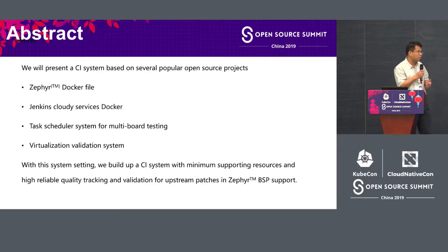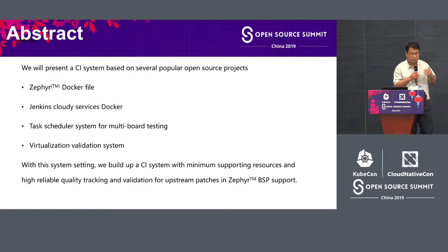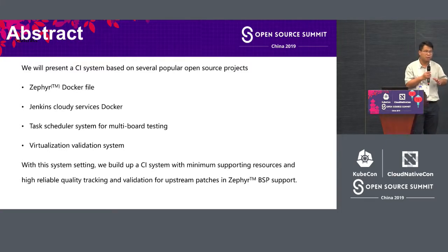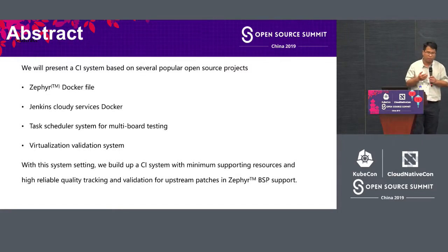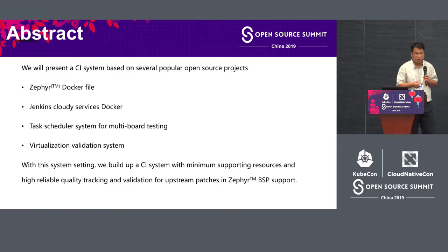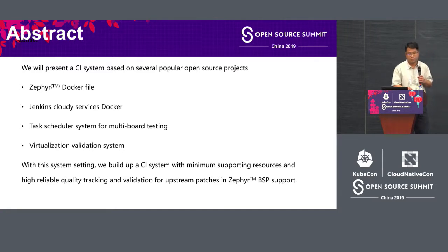This is the abstract of my speech. We will adopt some open-source Dockers and put them together via some glue scripts. We will have some components and hardware to install or deploy the system. Based on our experience, we can build such a CI system with minimum supporting resources, high reliable quality tracking, and can make the test available after five minutes.